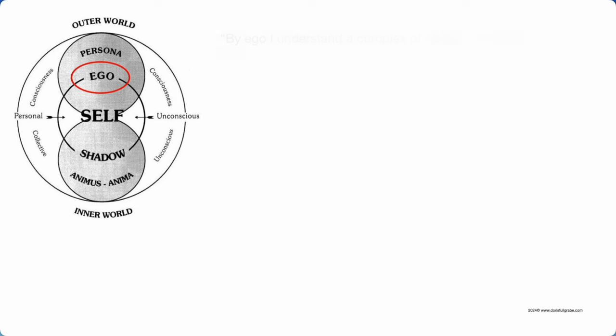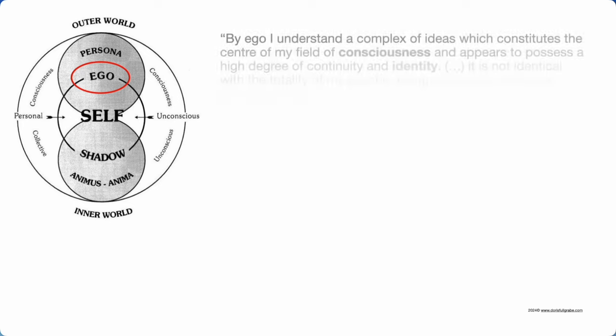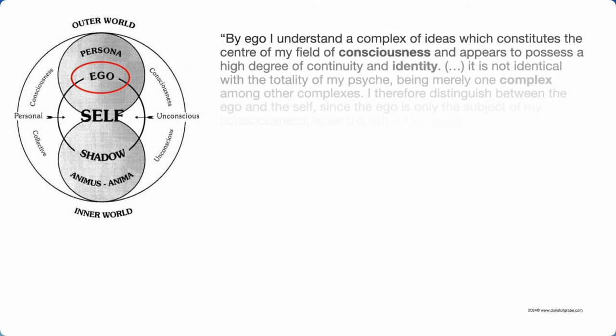Your persona is part of your ego. In Jung's words: by ego I understand a complex of ideas which constitutes the center of my field of consciousness and appears to possess a high degree of continuity and identity. It is not identical with the totality of my psyche, being merely one complex among other complexes. I therefore distinguish between the ego and the self, since the ego is only the subject of my consciousness, while the self is the subject of my total psyche, which also includes the unconscious.